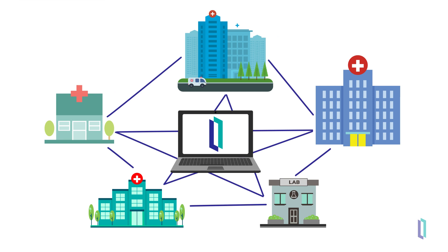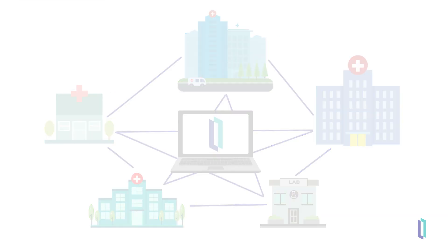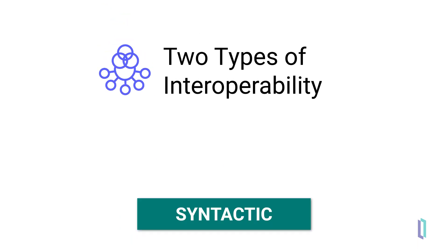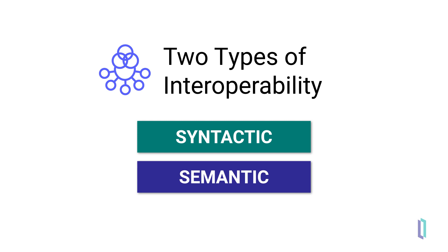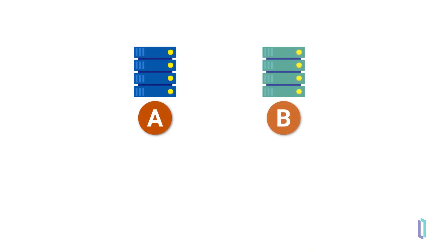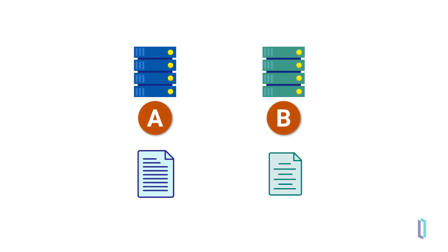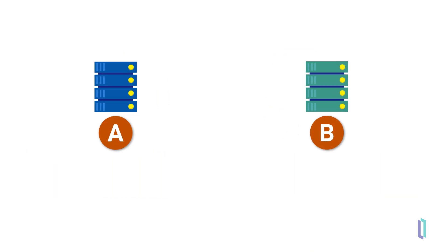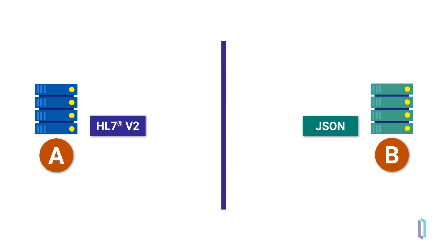As we look more closely at the challenges of connecting systems and facilities, we will distinguish two types of interoperability: syntactic and semantic. Syntactic interoperability, where the structure of a message is defined but the meaning is not, makes it possible for systems to send and receive data in different formats. Without this, systems cannot communicate effectively.